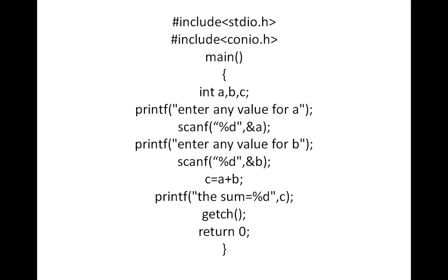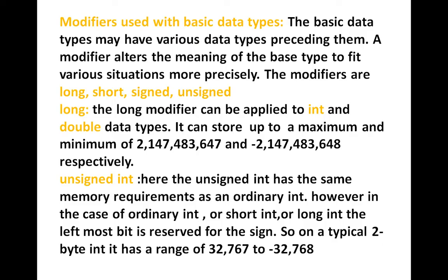Next we will go to another topic: modifiers used with basic data types. The basic data types may have various modifiers preceding them. A modifier alters the meaning of the basic type to fit various situations more precisely. The modifiers are: long, short, signed, and unsigned. I am going to explain long and unsigned. The long modifier can be applied to int and double data types.